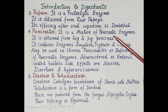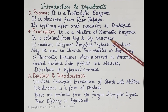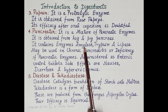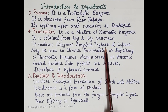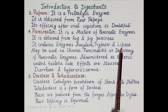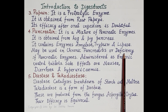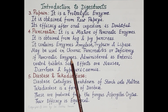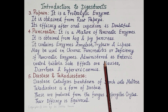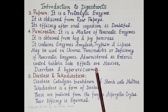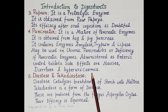The next preparation is pancreatin. As the name suggests, it consists of a mixture of pancreatic enzymes and is obtained from hog and pig pancreas. It contains amylase that digests carbohydrates, trypsin that digests proteins, and lipase that digests fats. It may be useful in chronic pancreatitis or in disorders associated with deficiency of pancreatic enzymes. It is administered as enteric-coated tablets, and side effects include nausea, diarrhea, and hyperuricemia.